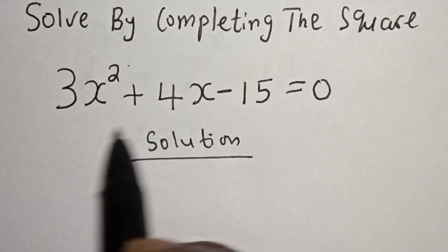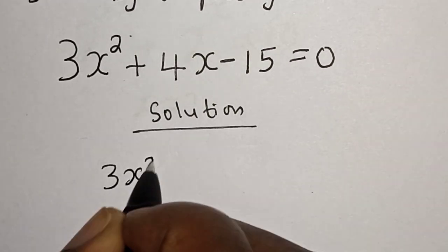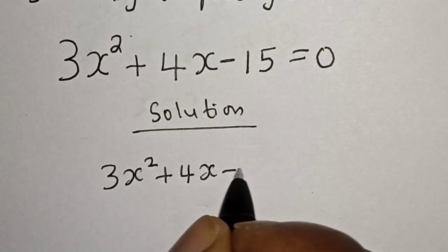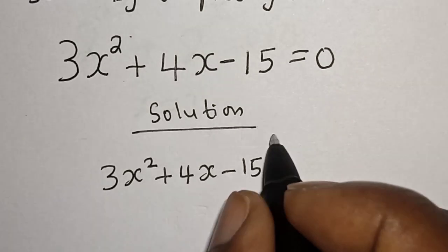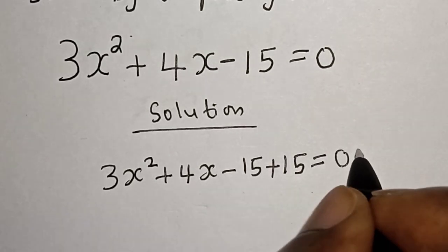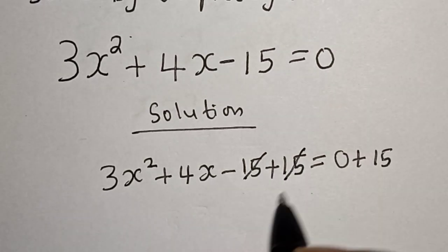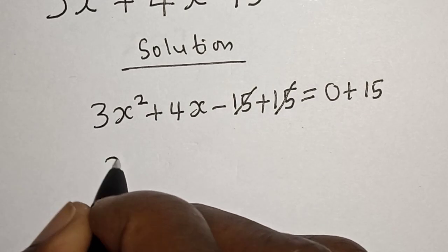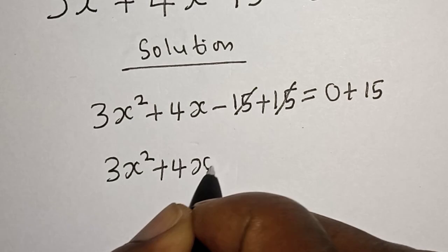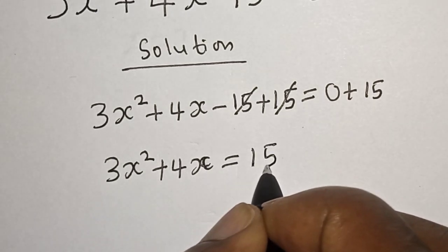Solution. Let's add 15 to both sides: 3x² + 4x - 15 + 15 = 0 + 15. This will cancel, and we have 3x² + 4x = 15.